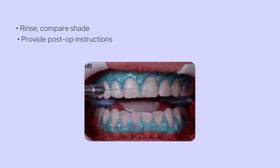Once the session is done, we thoroughly remove the bleaching agent and rinse the teeth. Then, we check the new shade and compare it to the initial one to assess the improvement. Finally, we give the patient post-treatment instructions, like advising them about possible sensitivity. Sometimes using desensitizing agents or toothpaste helps, and we also recommend avoiding staining foods and drinks for at least 24 to 48 hours.